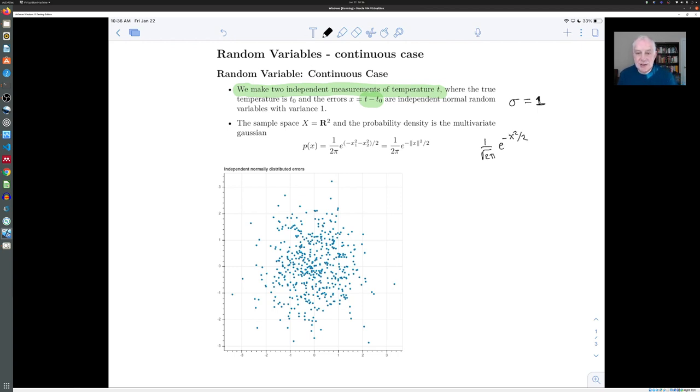And when we combine those two measurements together, we get a probability density which looks like this, e to the minus x one squared minus x two squared over two, or e to the minus norm of x squared. Remember that the norm of x in this case is just x one squared plus x two squared.